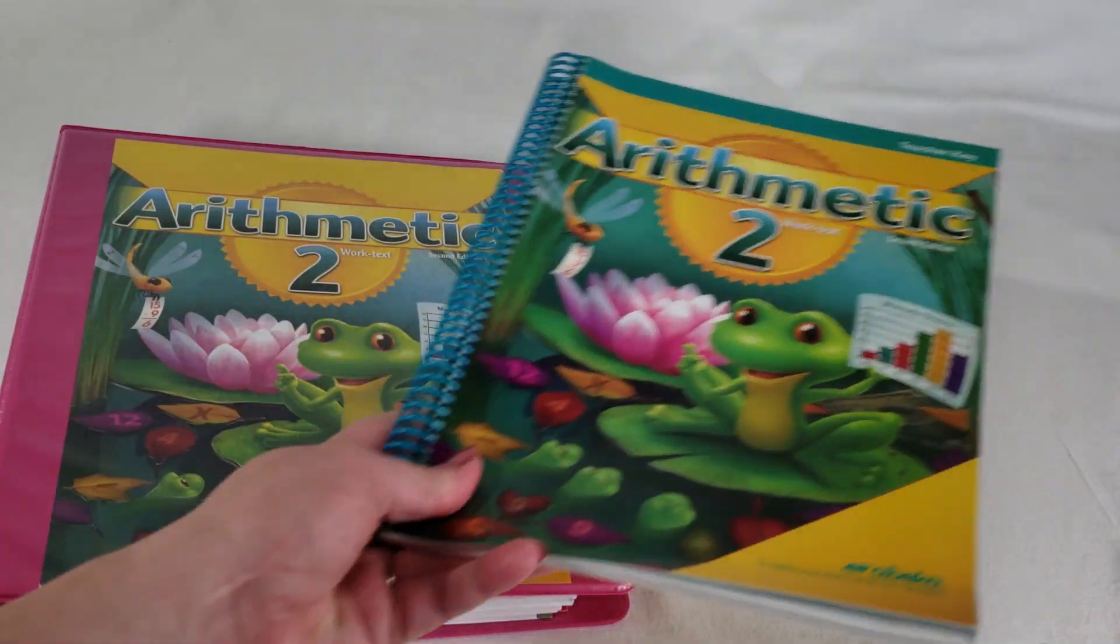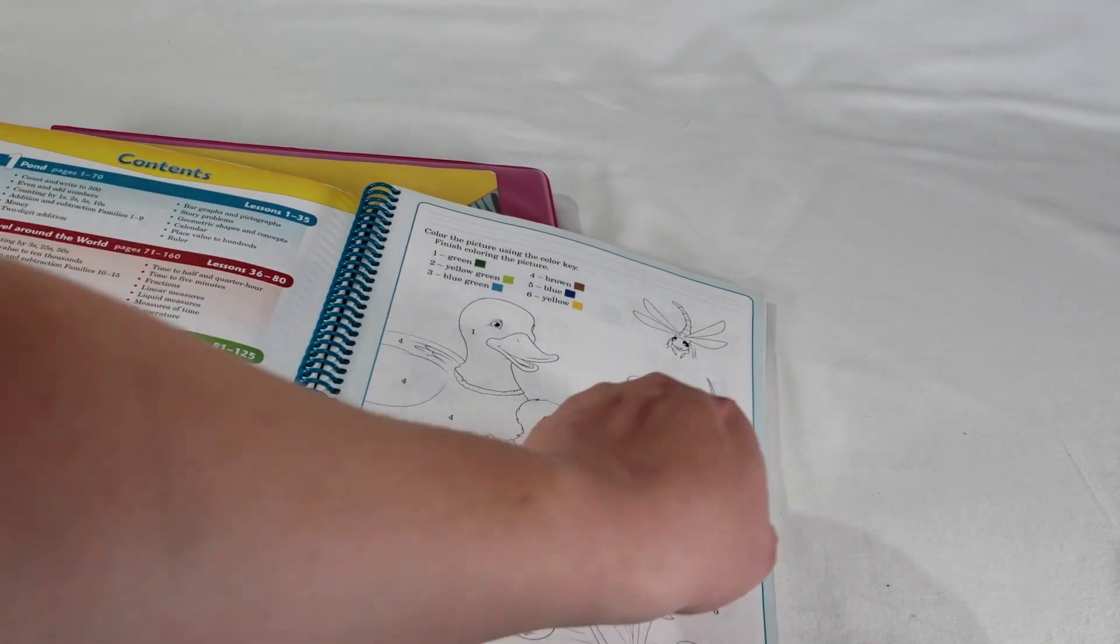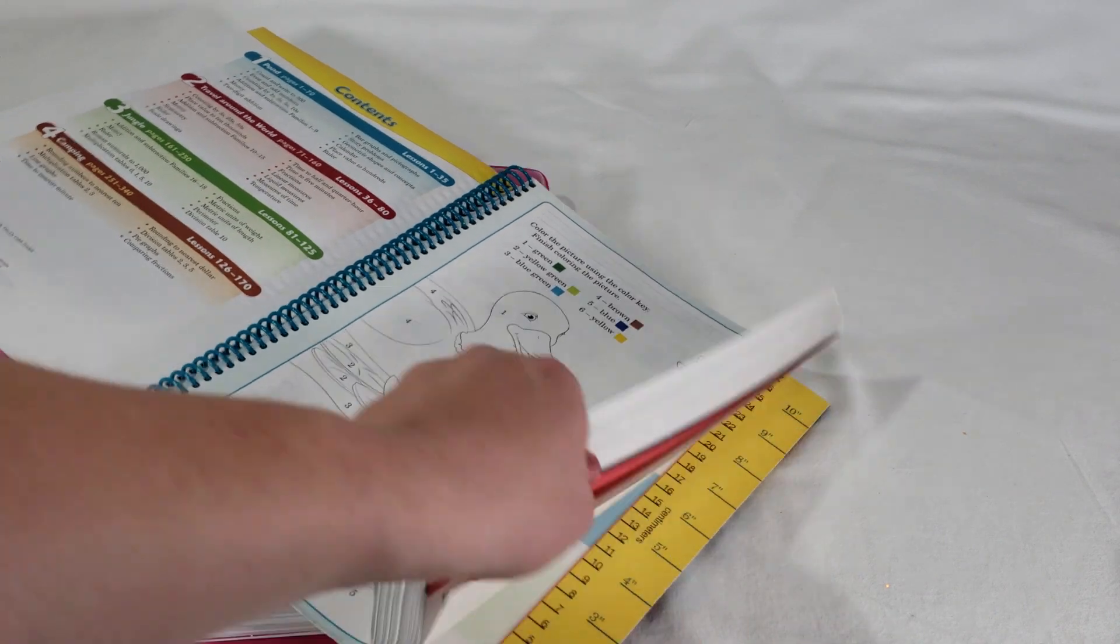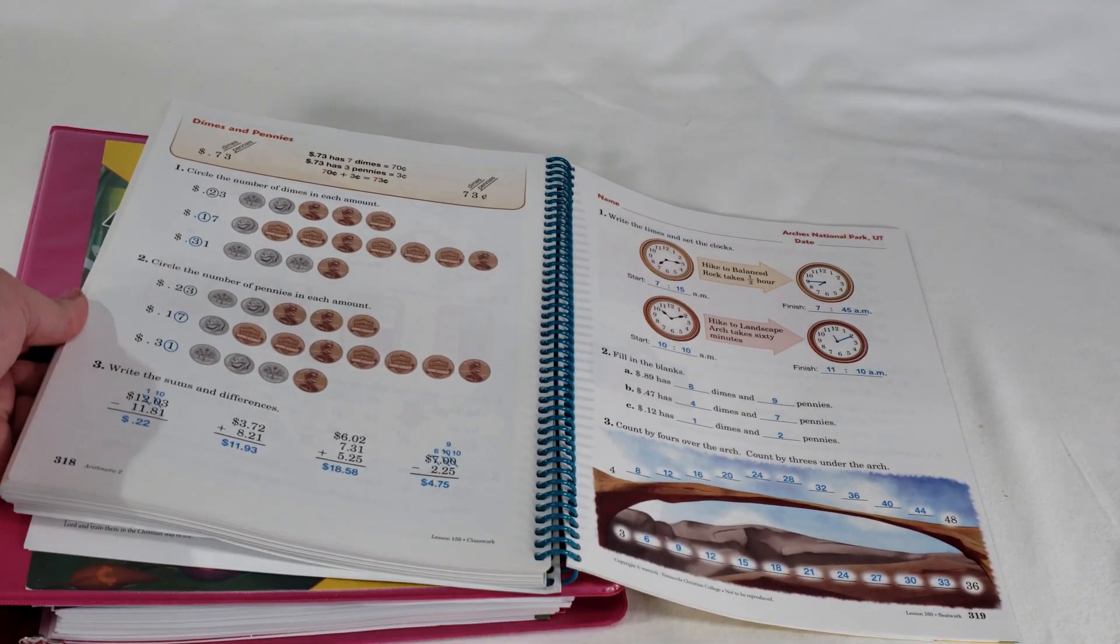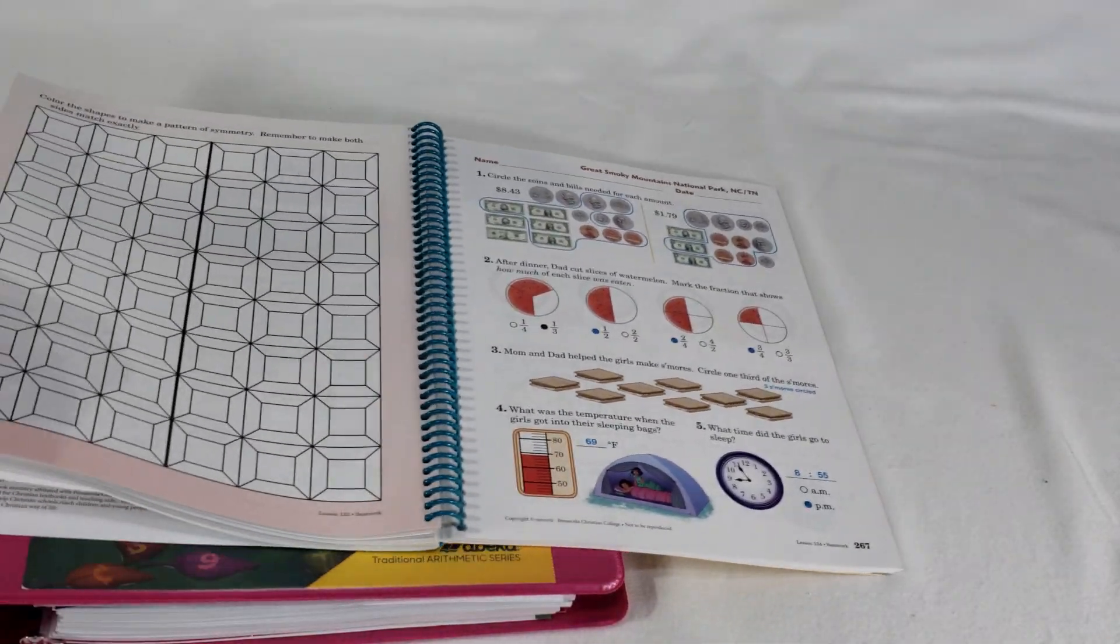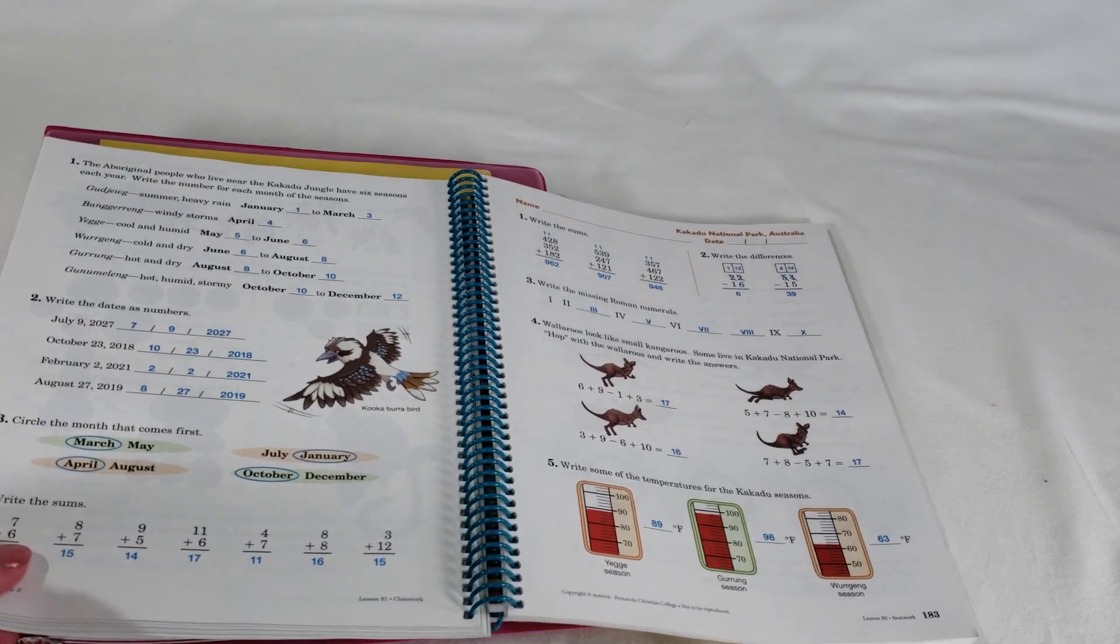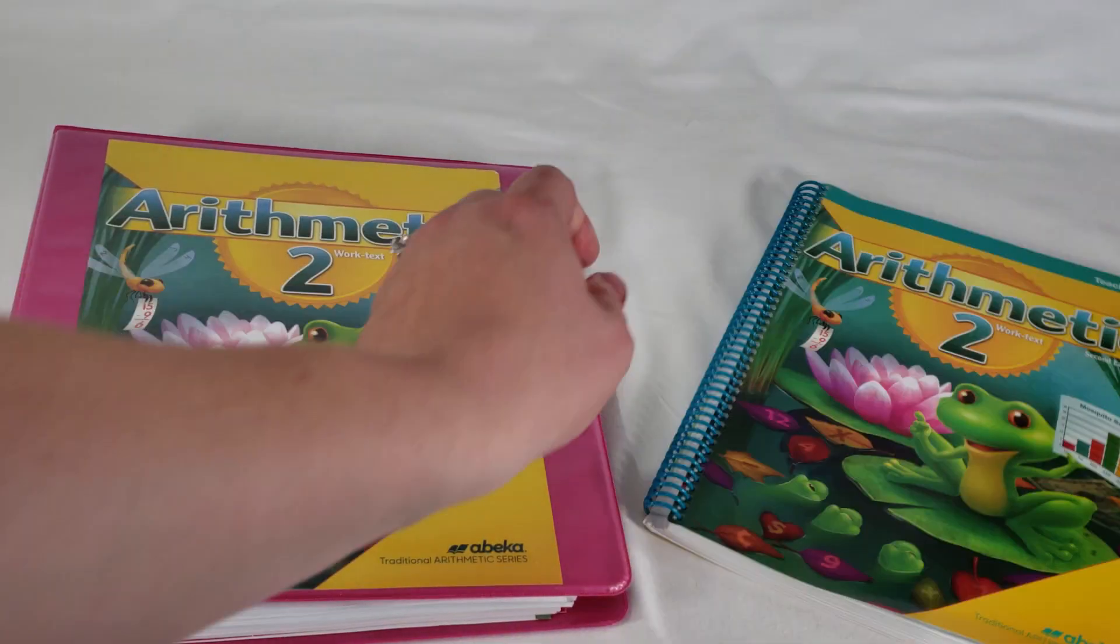They're just really good review and coverage. Let me show you real quick what the answer key looks like. This is a teacher key, so it's basically the same book - the pages are a lot thinner - but it's just the same pages with the answers in it.